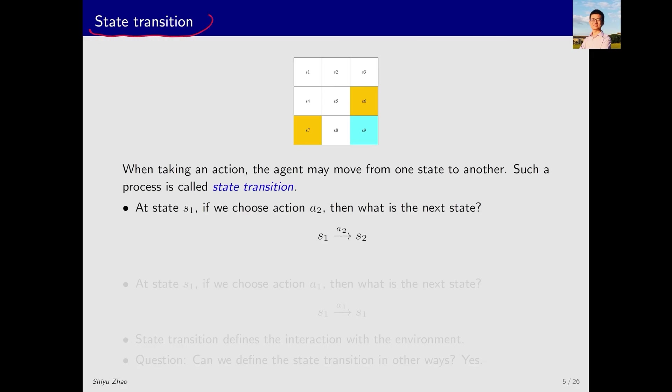The next concept is state transition. What does this mean? It refers to the process where, upon taking an action, the agent moves from one state to another. This process is known as state transition. For example, in state S1, if the action taken is A2, with A1 moving up, A2 moving right, A3 moving down, A4 moving left, and A5 staying still, the subsequent state would be S2. This process can be represented by an expression where, in S1, taking action A2 transitions to S2.